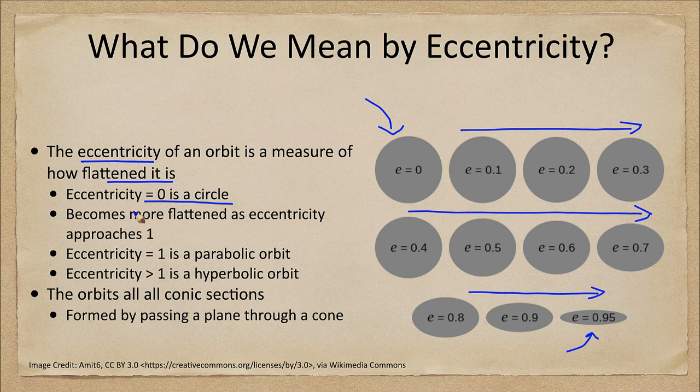With a planetary orbit within the solar system, if it was perfectly circular you'd have an eccentricity of zero. Well, that's not going to happen — you're always going to have some very slight eccentricity. The Earth's eccentricity is a little bit greater than zero; it's got a slight elliptical shape. The amount of eccentricity between zero and one tells you how flattened that ellipse is.